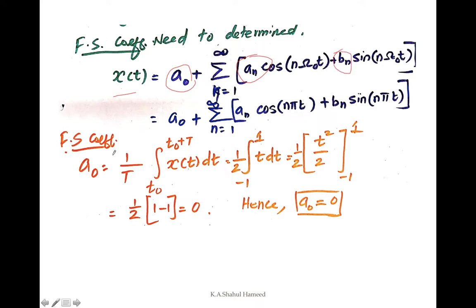The formula to find a naught is: a naught equals 1 by T, integration from t naught to t naught plus T of x(t) dt. Here t naught is the lower limit and t naught plus T is the upper limit. We have considered minus 1 to plus 1, so replacing the limits to minus 1 to plus 1 with time period capital T equal to 2, we get 1 by 2 integration from minus 1 to plus 1 of t dt.